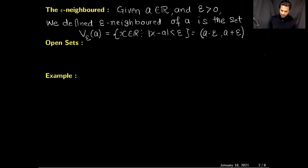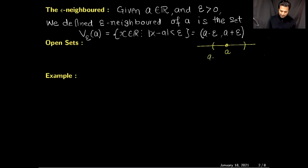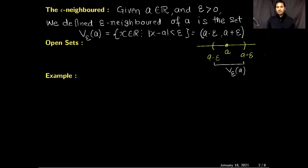If I draw a picture — if you have a point a, then the epsilon neighborhood of that point is an open bubble around that point whose radius is epsilon, and a is the center of that bubble. This open interval is denoted by V_ε(a). So this is the definition of the epsilon neighborhood of a point.